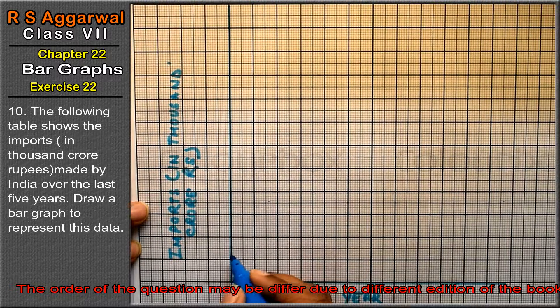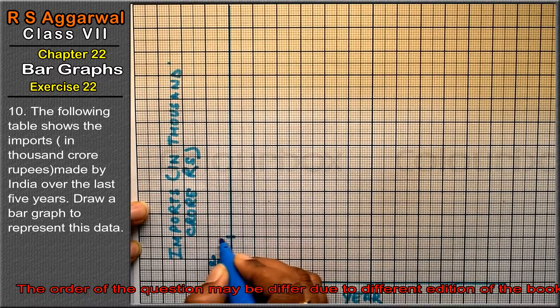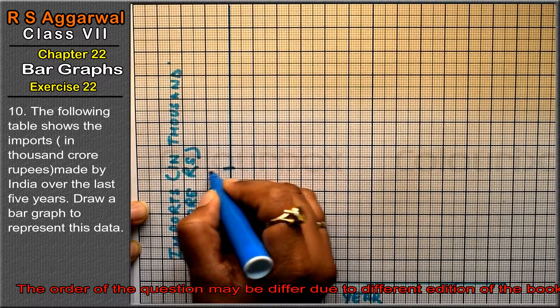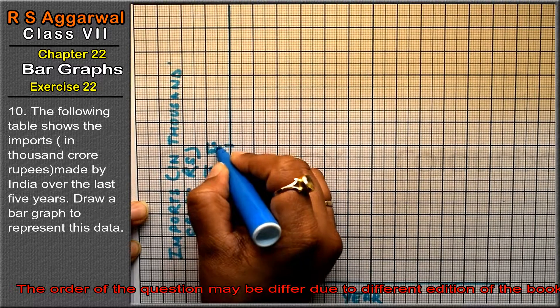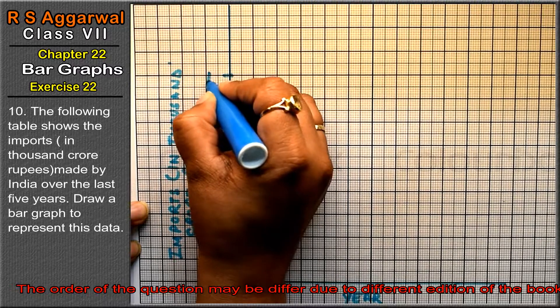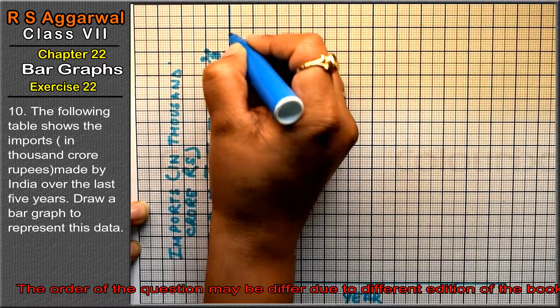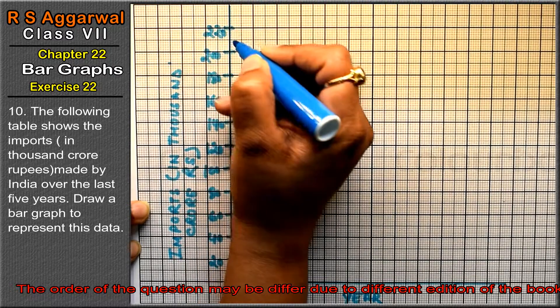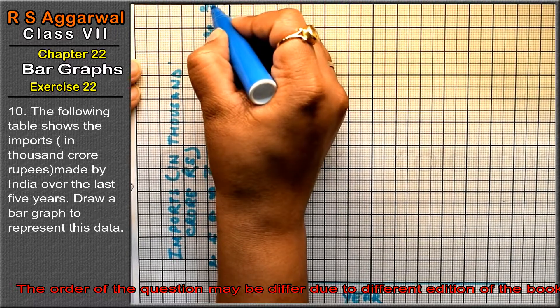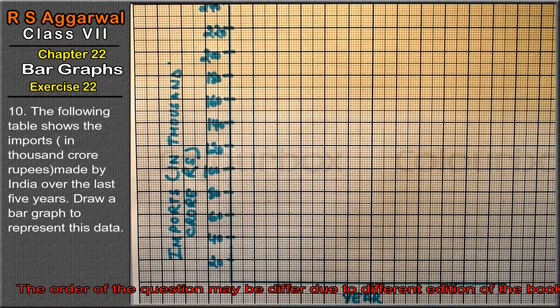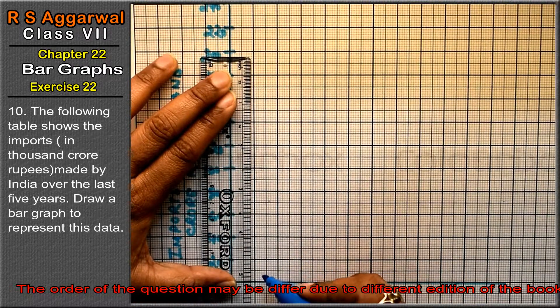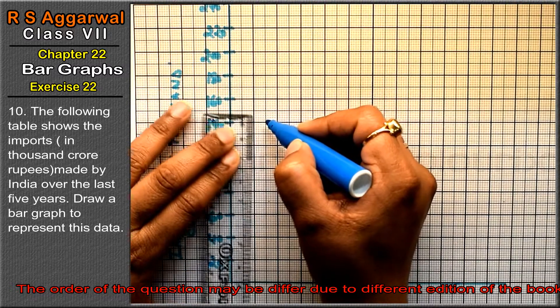We mark the scale on the y-axis: 20, 40, 60, 80, 100, 120, 140, 160, 180, 200, 220, 240. Now for 2001-2002, the value is 148. We count to 70 and mark the bar.